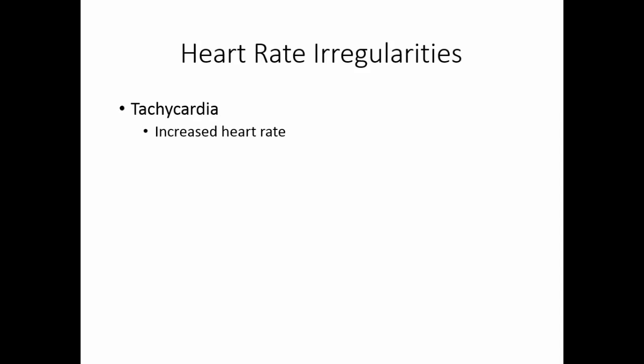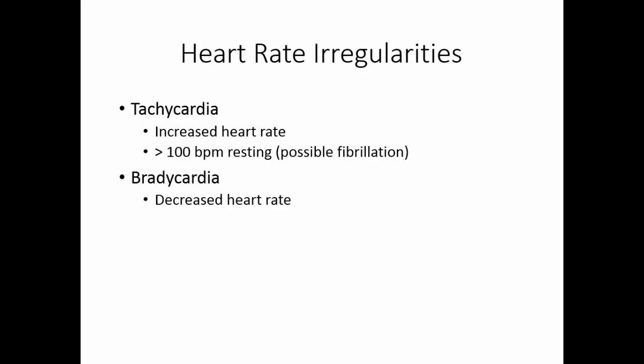Tachycardia is an increased heart rate — more than 100 beats per minute at rest, not just because you've exercised. The higher your heart rate goes, the greater the possibility of fibrillation. Bradycardia is a decreased heart rate, less than 60 beats per minute at rest. Less than 60 beats per minute can indicate that your AV node is pacing rather than your SA node. However, if you're a trained athlete, that lower heart rate may be the effect of having a very strong heart.